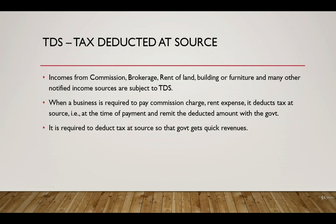Commission, brokerage, or rent of land or building are some common examples where TDS is applicable. There are other incomes as well on which TDS is applicable, but for simplicity I have mentioned just a few. The objective of deducting tax at source — at the time of payment — is that the government gets its revenue faster. That is the main motive behind TDS.